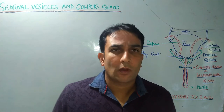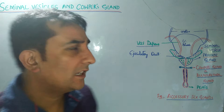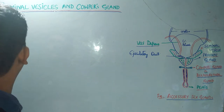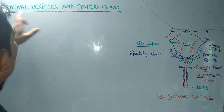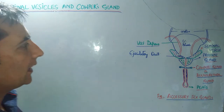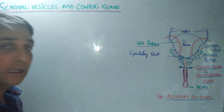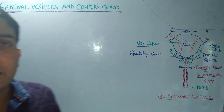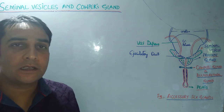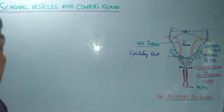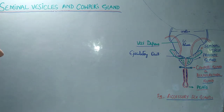Welcome students, you are watching Mudabir's Biology Club. Today our topic is the seminal vesicles and the Cowper's glands. The seminal vesicles and Cowper's glands are basically the male accessory sex glands.